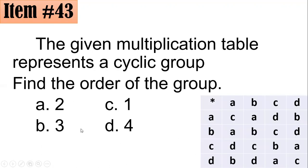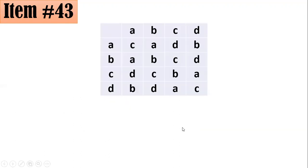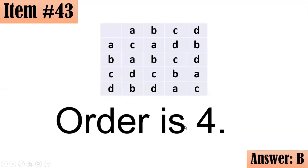Item 43: The given multiplication table represents a cyclic group. Find the order of the group. Did you go for 2, 3, 1, or 4? You can see that there are 4 elements — A, B, C, or D — in each row or column. Hence, the order is 4, letter B.